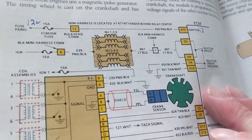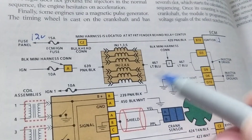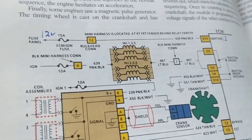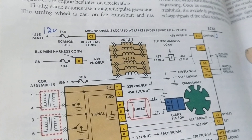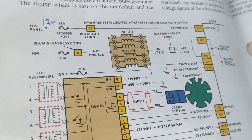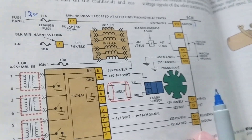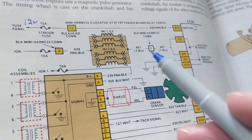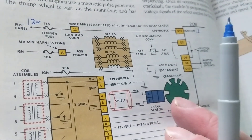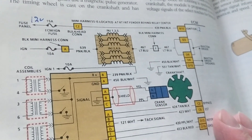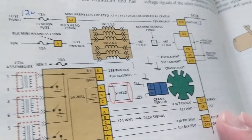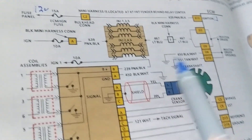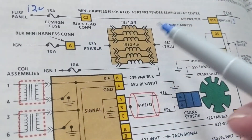Now comes the hard part. We have fuel injectors — how many? One, two, three, four, five, six. That tells us it's a V6. One side of the fuel injectors goes to the power supply at 12 volts, and the other side is commanded or controlled by the computer.